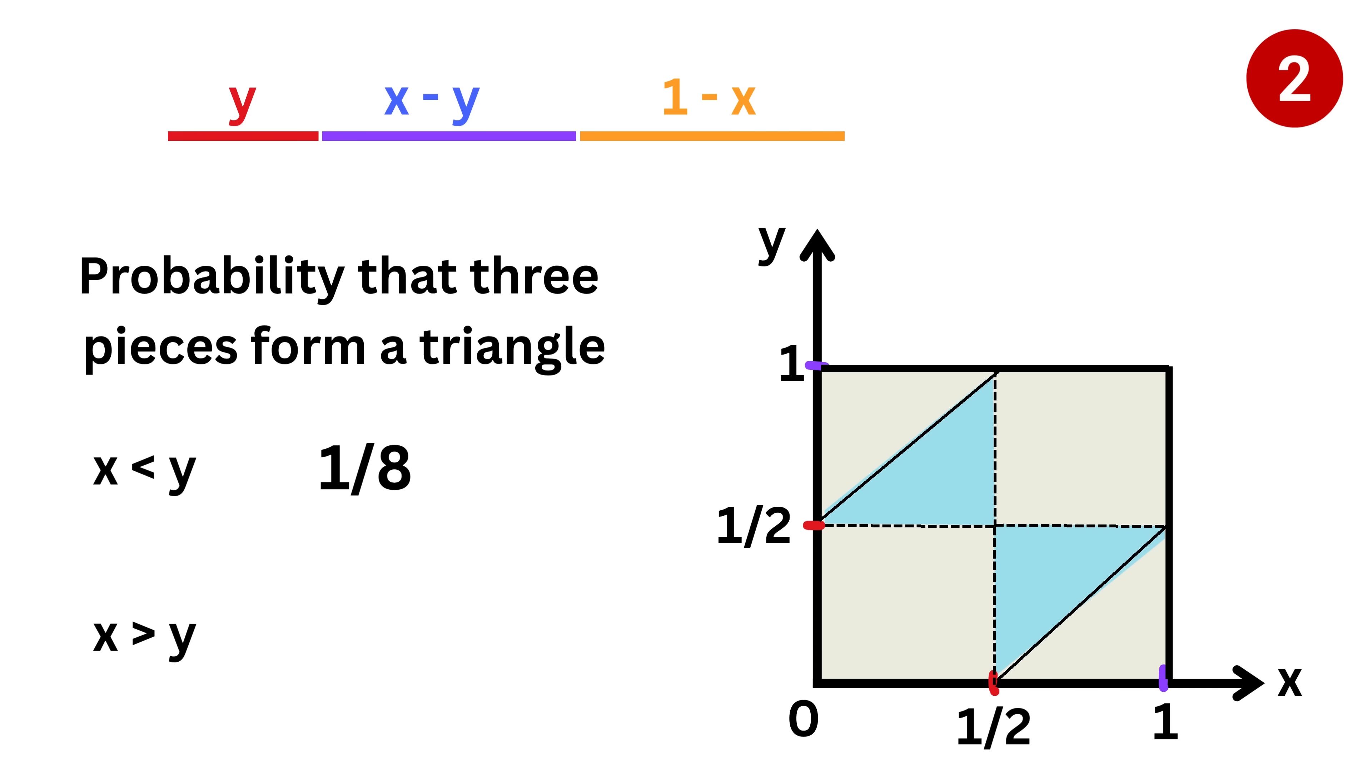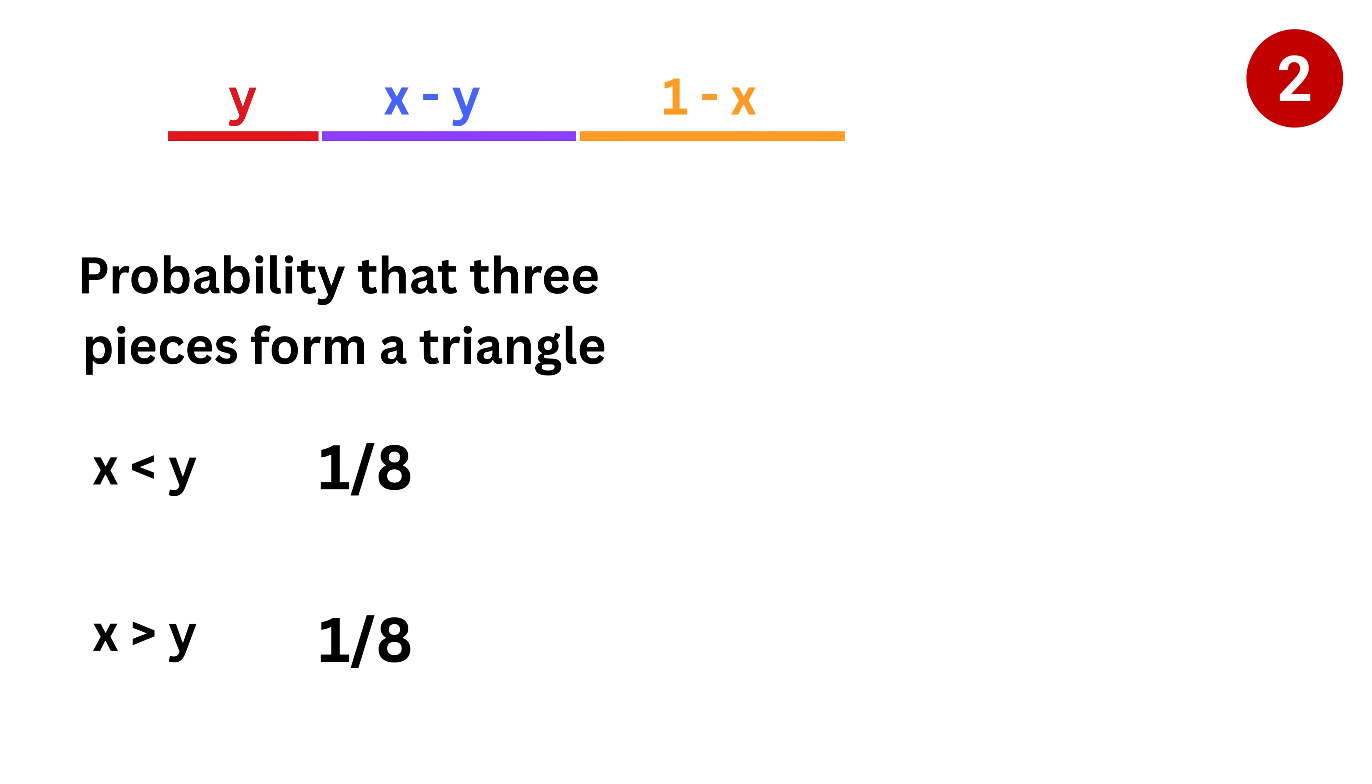Now for the second case where x is greater than y, we can use symmetry and this will be our region of interest whose area will again be one over eight. Thus the total area is this plus this, or one over four.